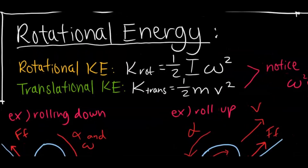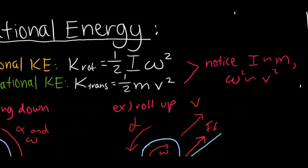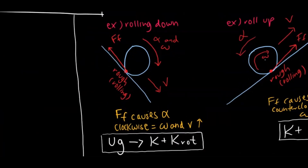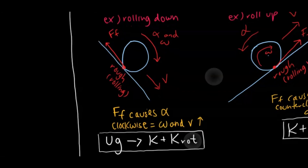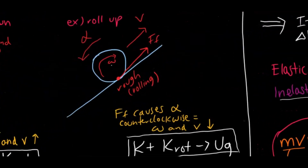Rotational kinetic energy is equal to one-half times moment of inertia times angular velocity squared — similar to translational kinetic energy, which is one-half mv². Moment of inertia corresponds to mass, and angular velocity corresponds to linear velocity. When a ball rolls down a slope, the force of friction causes the angular acceleration. Since friction points clockwise, angular acceleration is clockwise, speeding the ball up. It starts with gravitational potential energy and that converts to both translational and rotational kinetic energy.